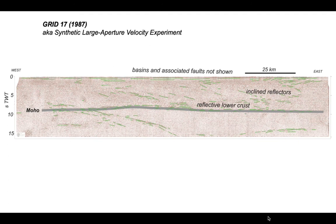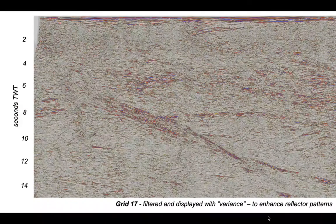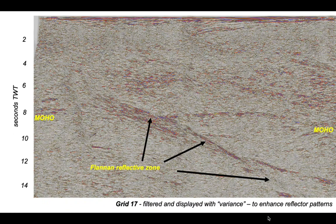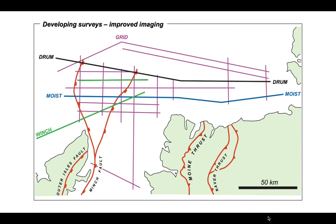Using image enhancement methods not available to the BIRPS team in the late 1980s, we can bring out the reflectivity more clearly — essentially a digital line drawing with the Moho coming through and the Flannan reflective zone climbing up to and apparently crossing the Moho but not offsetting it. All this seismic acquisition by the BIRPS group through the early to mid-1980s is a history of improved seismic imaging. Let's contrast these four images.